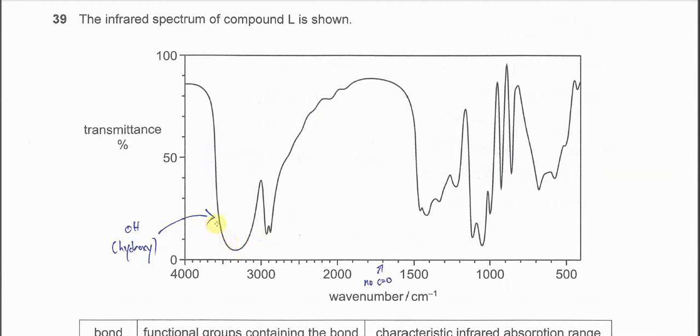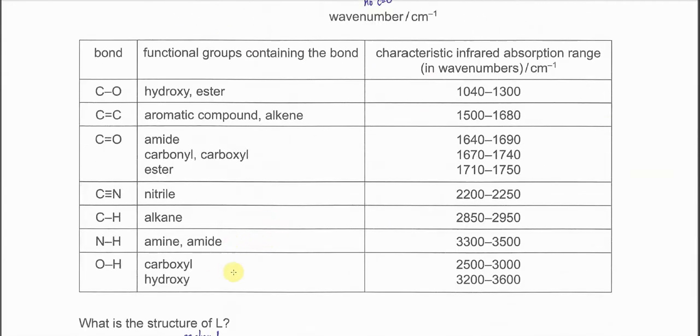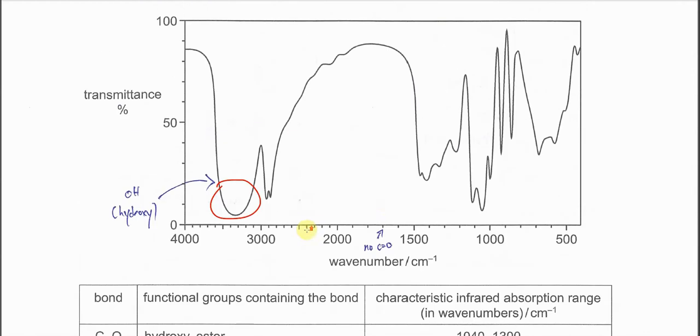This part shows the OH, the hydroxy group. You can check from the table - OH hydroxy is from 3,200 to 3,600. For this compound, we know that around 1,700...